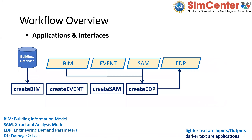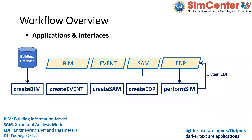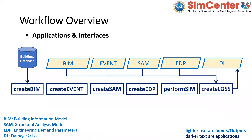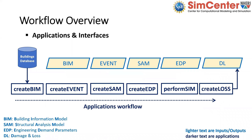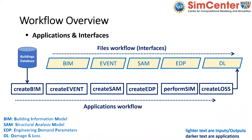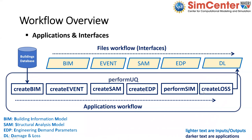The next step is creating a structural analysis model to compute building response and create the EDPs based on the event. For seismic events, particular EDPs are important for loss assessment. After that, we perform the simulation — run a finite element model — to get the EDP values. At the end, we do loss estimation using all of these files. We have five interface files and six main applications, plus PerformUQ for uncertainty.